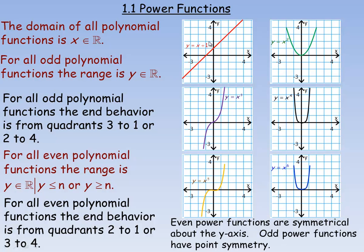The most simple polynomial function is the linear function. Although this isn't a pure power function, y equals x plus 1 is an example of a linear polynomial function, and it's a straight line. The quadrants are labeled usually with Roman numerals: quadrant 1 is top right, quadrant 2 is top left, quadrant 3 is bottom left, and quadrant 4 is bottom right.